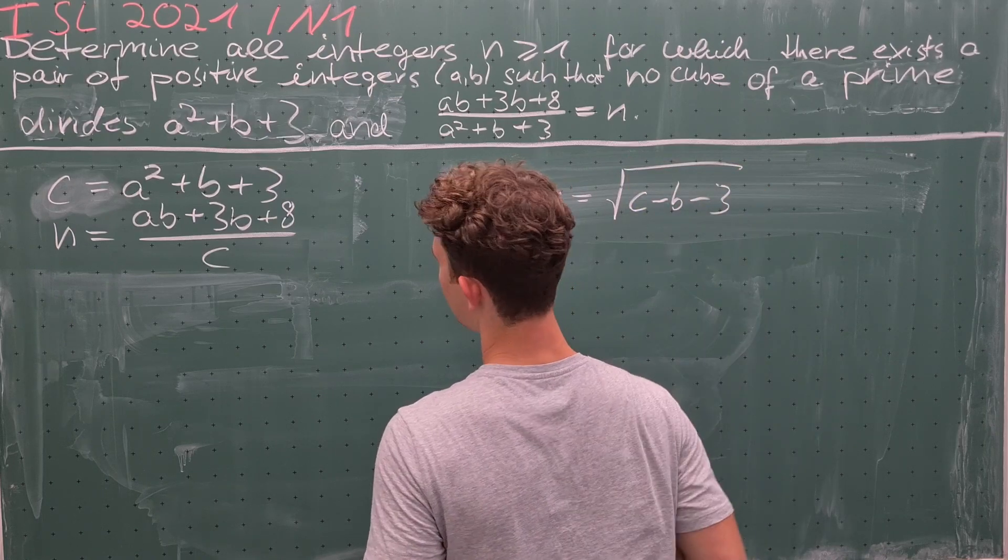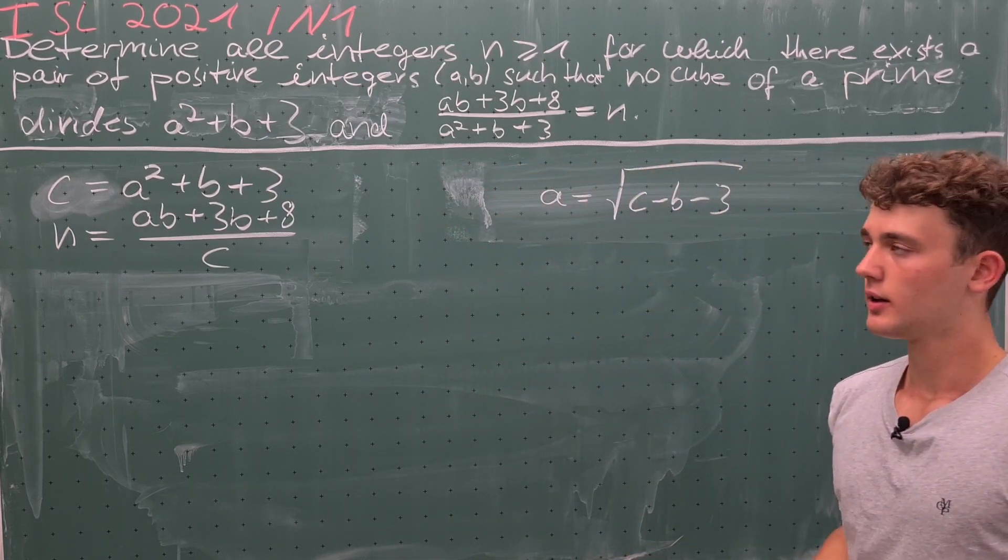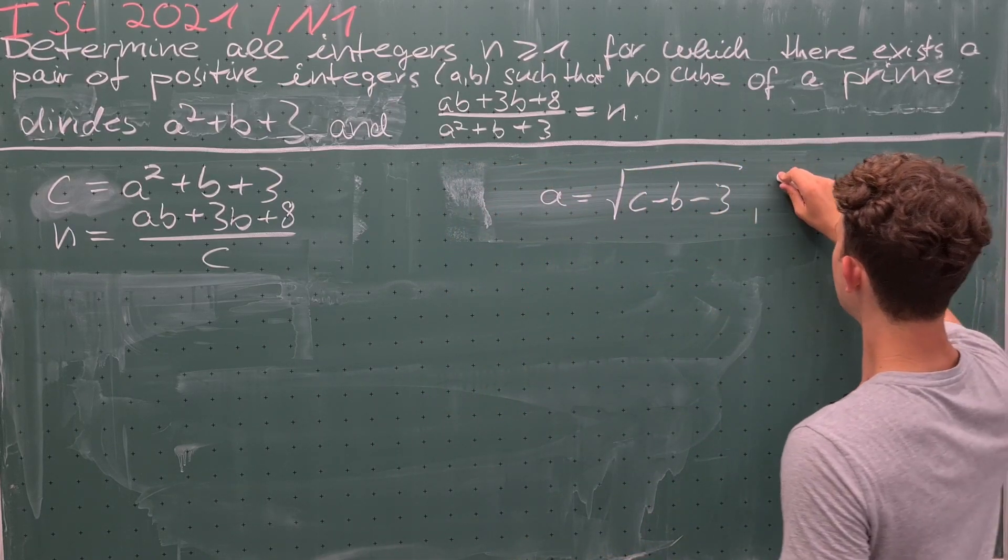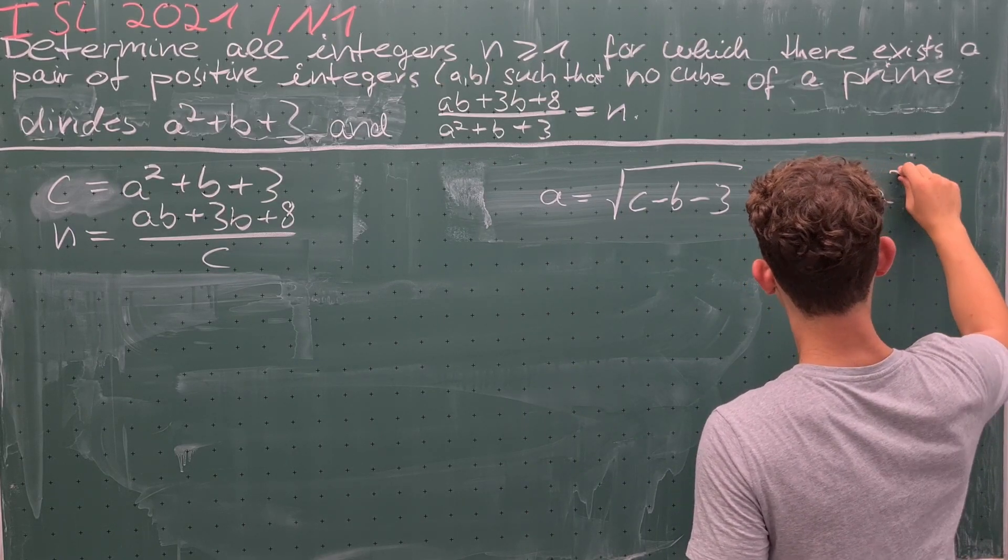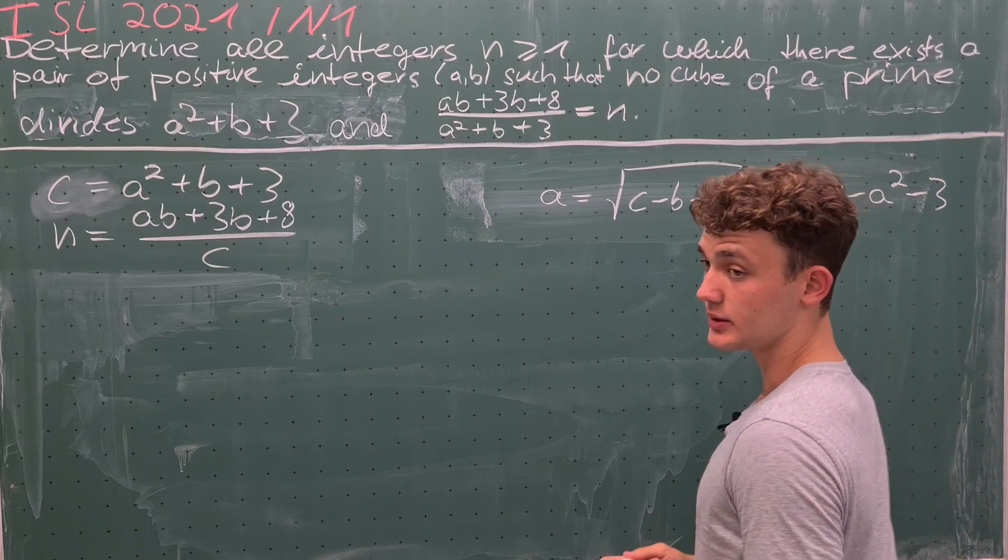because a equals the square root of c - b - 3, which is really not good for us. On the other hand, b = c - a² - 3, which is a polynomial,